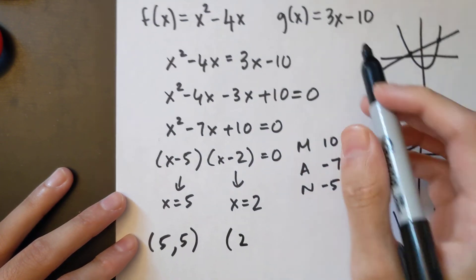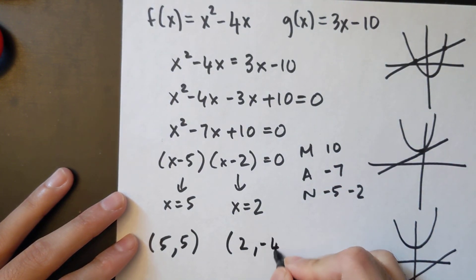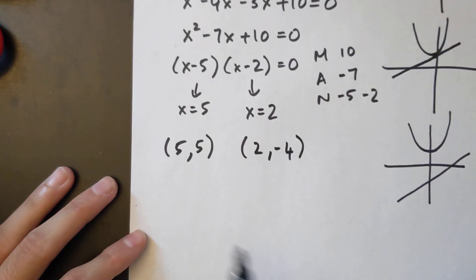And if I sub in 2 in this equation 3 times 2 is 6, 6 minus 10 is negative 4. So these are my two points of intersection of these two functions.